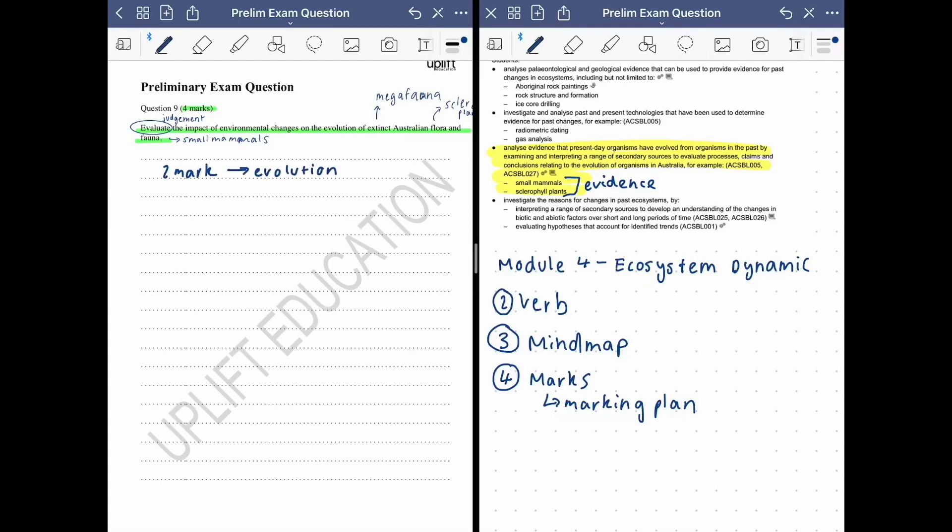So since it's four marks, two marks I would allocate towards explaining the evolutionary change. Evolution, so evolution plus the environmental change. So those of you who are familiar with the content would have known that Australia previously was a wet climate that was cold and was abundant with rainforests. So this is very different to the hot, arid and dry Australia we have today. So there's drastic differences between these two climates.